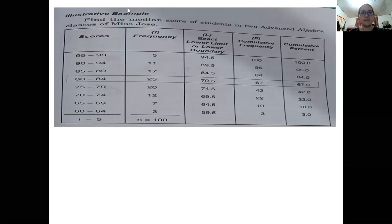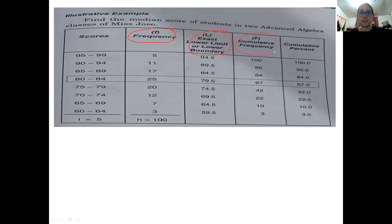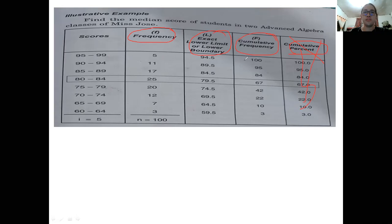Let's have an example: find the median score of students in advanced algebra. To solve the median for grouped data, you need the frequency (already given), the exact lower limit or lower boundary, and the cumulative frequency. You also need your N and your I. These are the key requirements to use the median formula for grouped data.